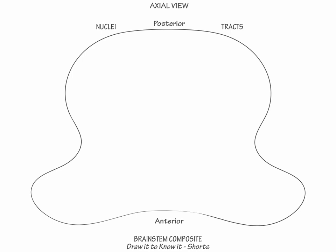We will follow these same nuclear groups and tracts throughout our brainstem sections. Now, divide the brainstem from anterior to posterior into its basis, tegmentum, and tectum.